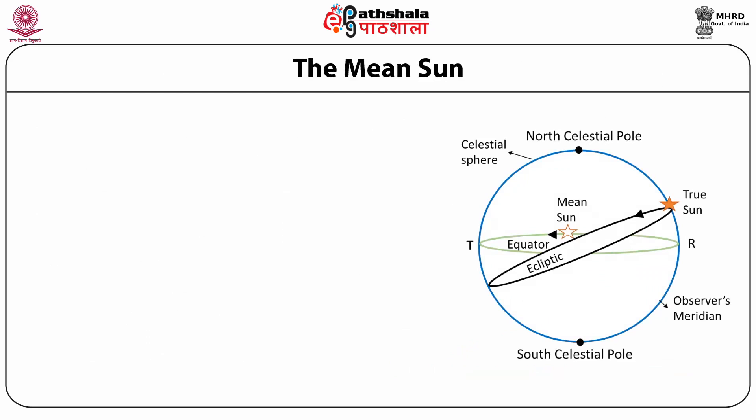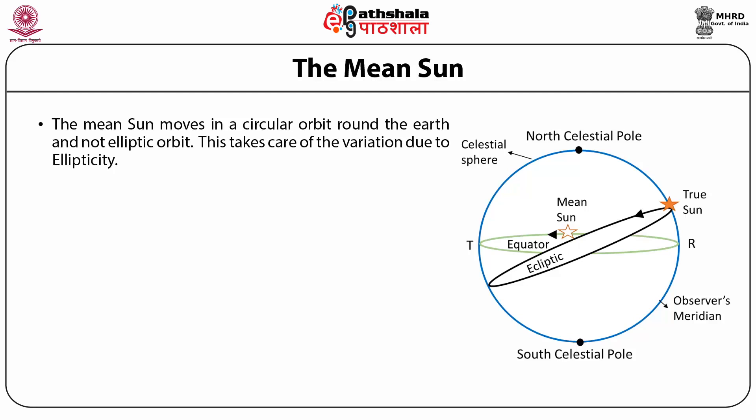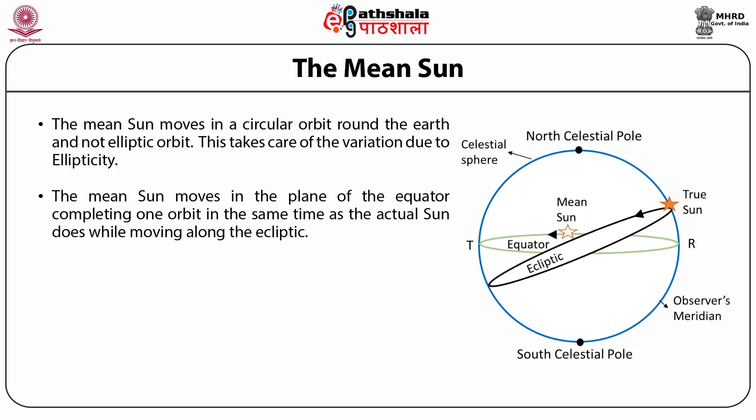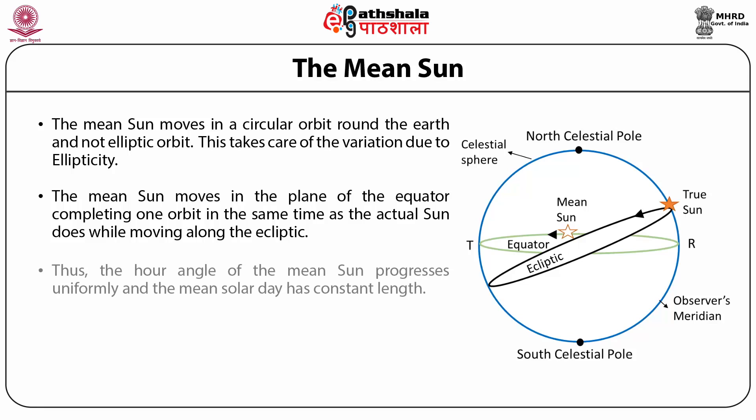We have just seen that the length of the day is not the same. Therefore, in order to have a uniform length of solar day, a fictitious mean sun is introduced. The mean sun moves in a circular orbit around the earth and not an elliptical orbit — this takes care of the variation due to ellipticity. The mean sun moves in the plane of the equator, completing one orbit in the same time as the actual sun does while moving along the ecliptic. This takes care of the problem due to obliquity of the ecliptic. Thus, the hour angle of the mean sun progresses uniformly and the mean solar day has constant length.